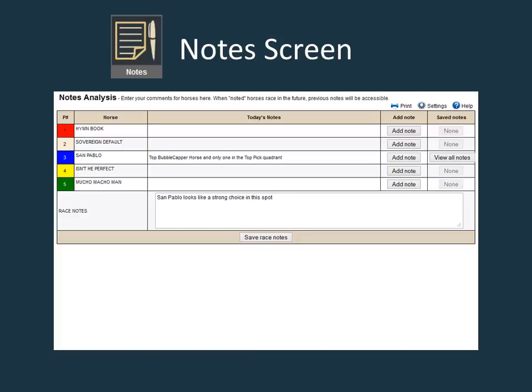Clicking on view all notes will bring up information from today's card as well as any previous notes about the horse from previous races. If you have already entered notes using your computer or tablet at home, going to mobile.trackmaster.com using your smartphone and bringing up your Echographics file is a great way to have your information at your fingertips at the track.